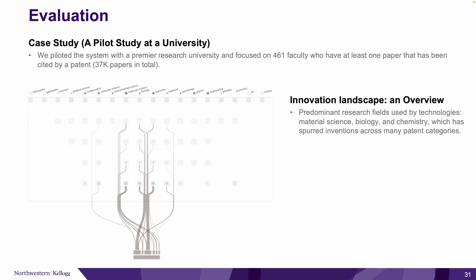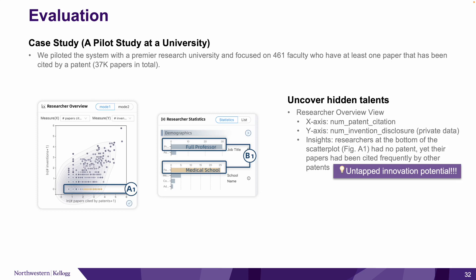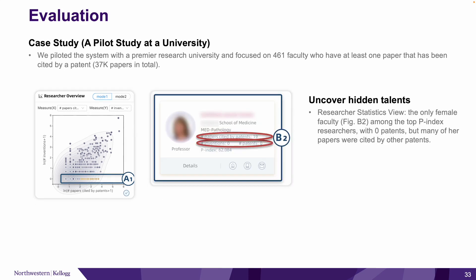After the overview, our experts were also interested in uncovering hidden talents and untapped innovation potential. So when we go to the researcher overview, at the bottom of the scatter plot lay an interesting group of researchers. They themselves had no invention disclosure, yet their papers had been cited frequently by other patents. Most of them are four professors at the medical school.